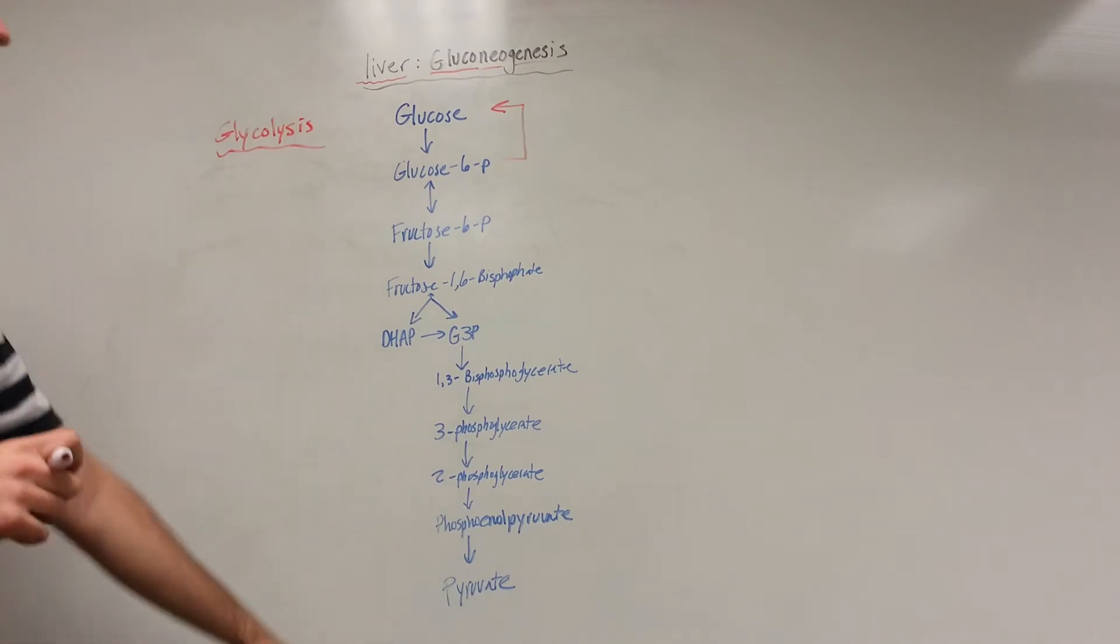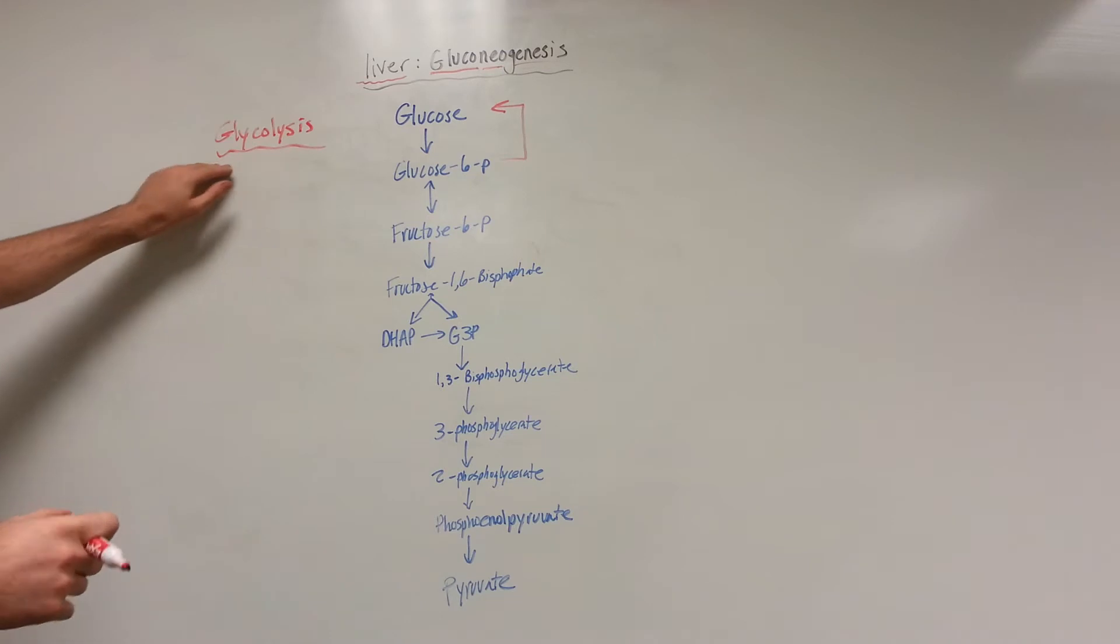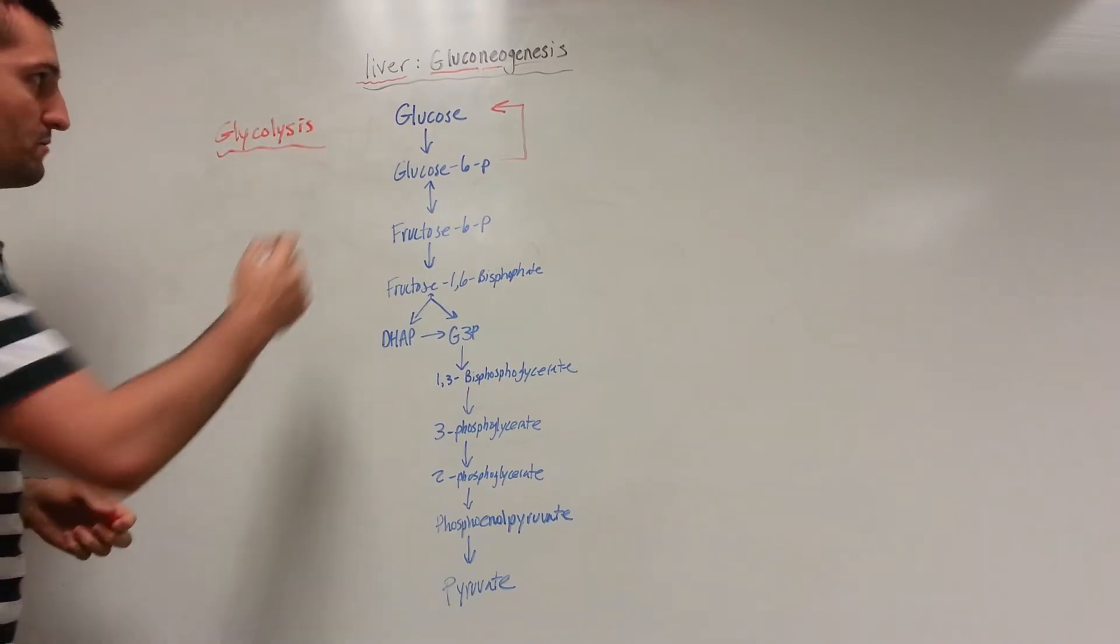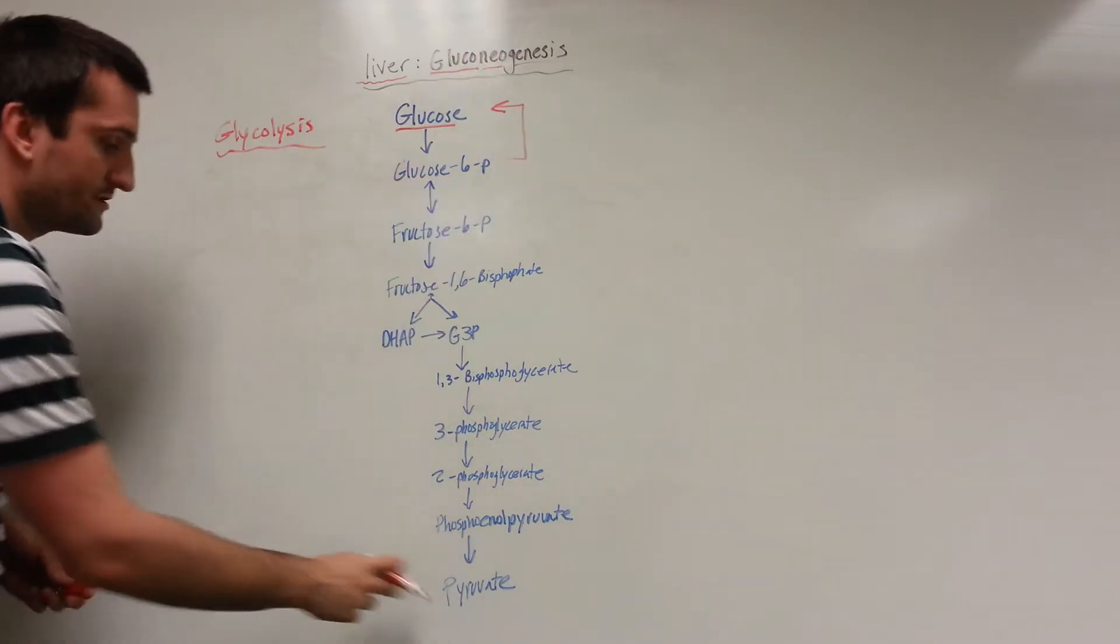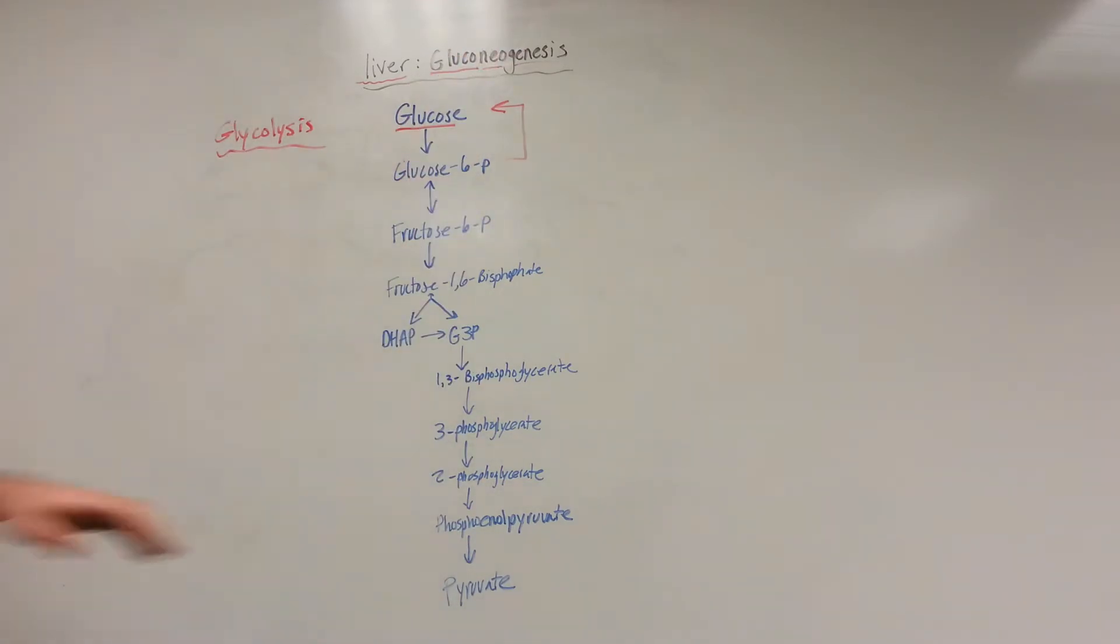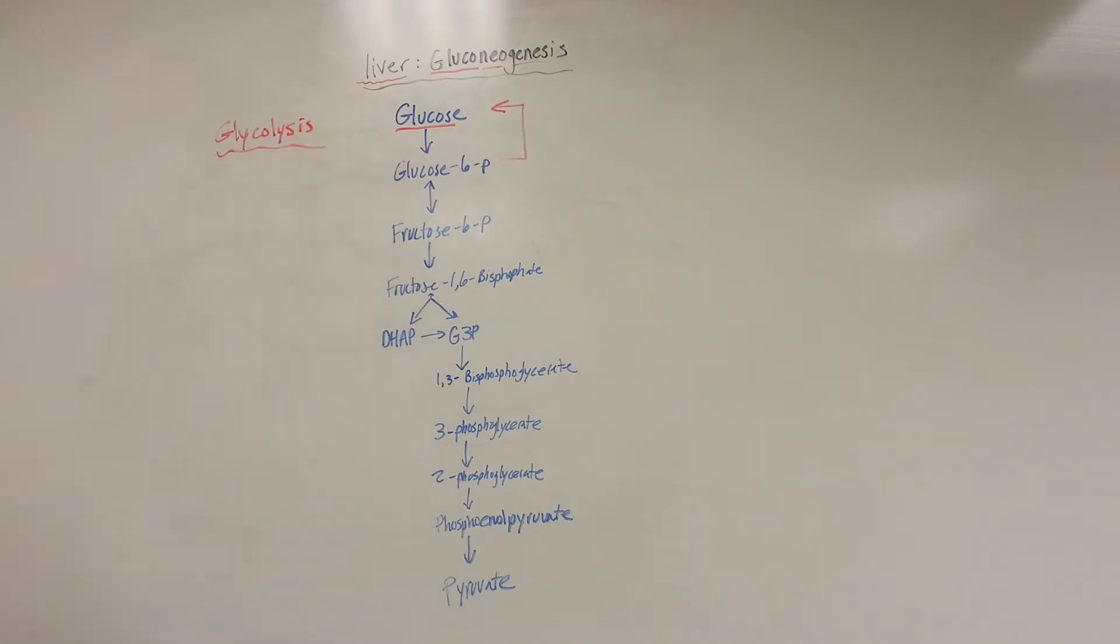To begin, we're going to start at the bottom because for glycolysis you start at the top and go down. Our final product is going to be glucose - we're generating new glucose. So we're going to start at pyruvate.